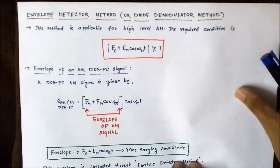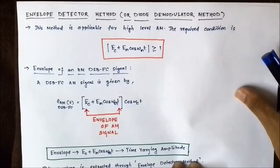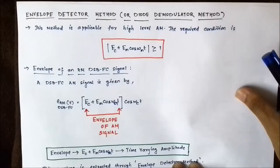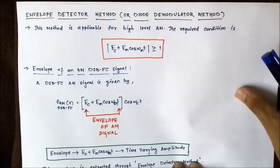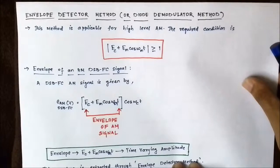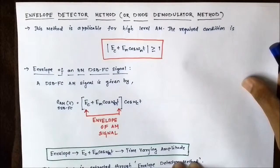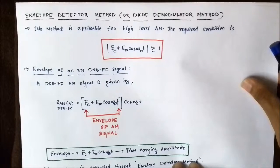Hello friends, welcome to Engineering Tutorial. In my previous video I discussed about the demodulation of double sideband full carrier signal using the square law demodulator method. In today's video we will be discussing about the envelope detector method, or the diode demodulator method, for detection of a DSBFC signal.